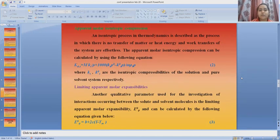Apparent molar isentropic compression. In thermodynamics, an isentropic process is defined as a process in which there is no transfer of matter or heat energy and the work transfers of the system are effortless. The apparent molar isentropic compression can be calculated by using the relation: